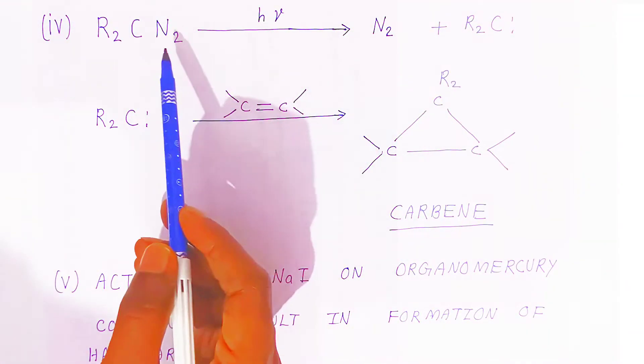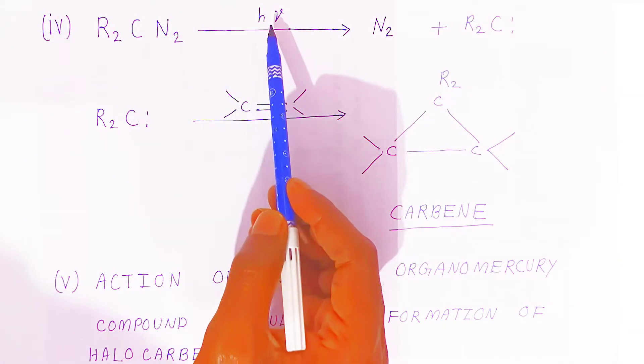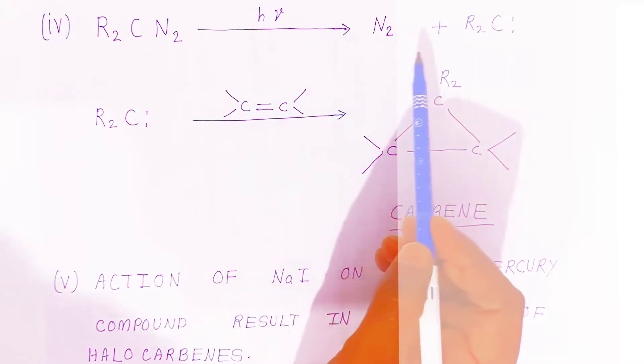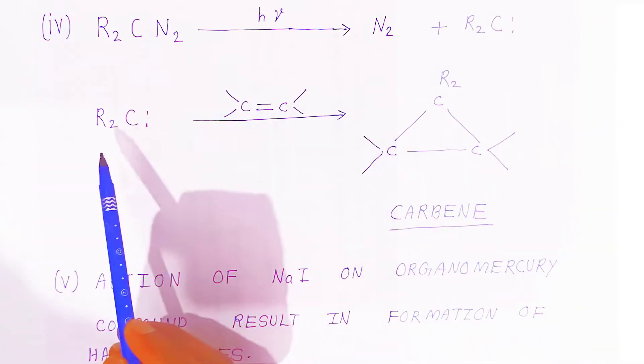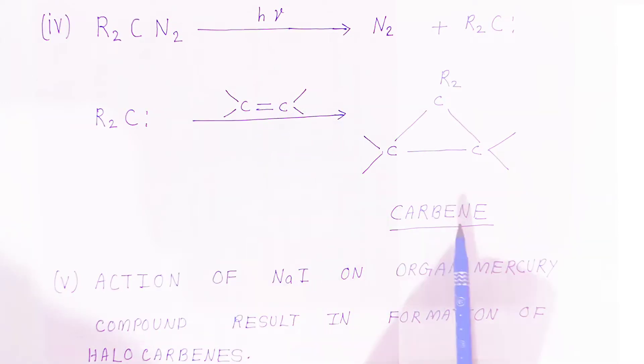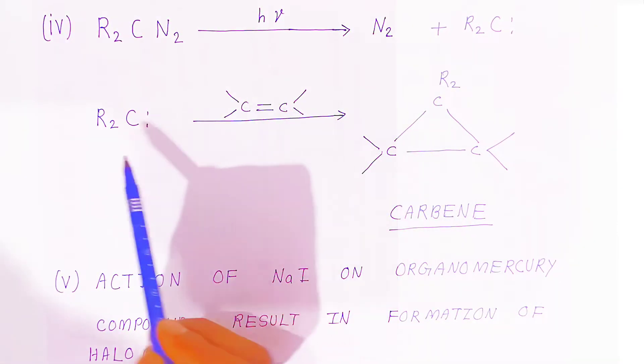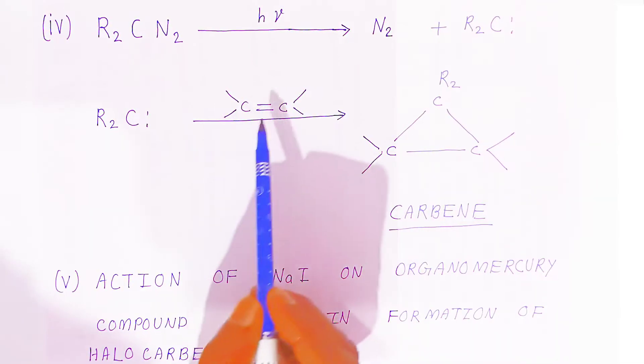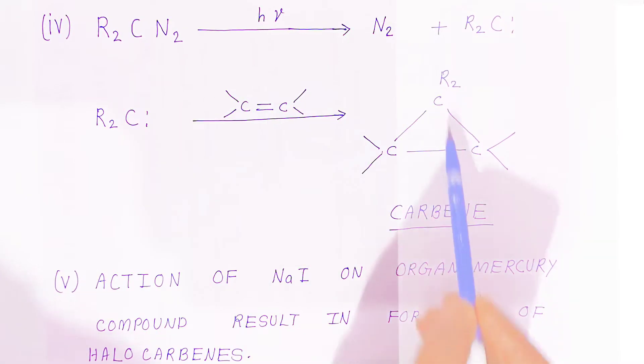This is the diazoalkane in the presence of hν, that is light. It will give you nitrogen and carbene. These carbenes will combine with the olefins, forming the carbene compound. It will combine with the radicals, and after combining with olefins, it will form the carbene compound.